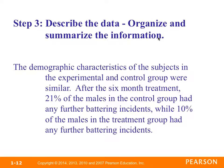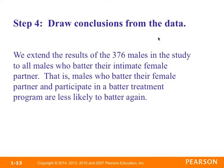Step three — describe the data: organize and summarize the information. The demographic characteristics of subjects in both groups were very similar. After six months, 21% of the males in the control group had further battering incidents, while only 10% of the males in the treatment group did. Step four — draw conclusions from the data. We extend the results of the 376 males to all males who batter their intimate female partner, concluding that males who participate in a batterer treatment program are less likely to batter again.